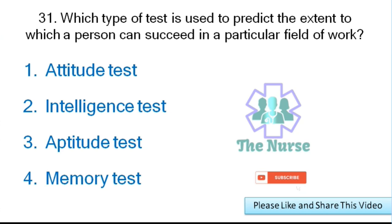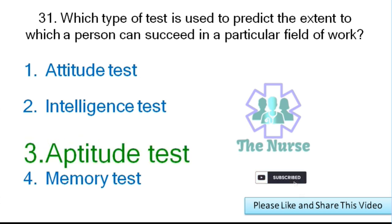Next question: Which type of test is used to predict the extent to which a person can succeed in a particular field of work? Options: attitude test, intelligence test, aptitude test, or memory test. Correct answer: aptitude test.